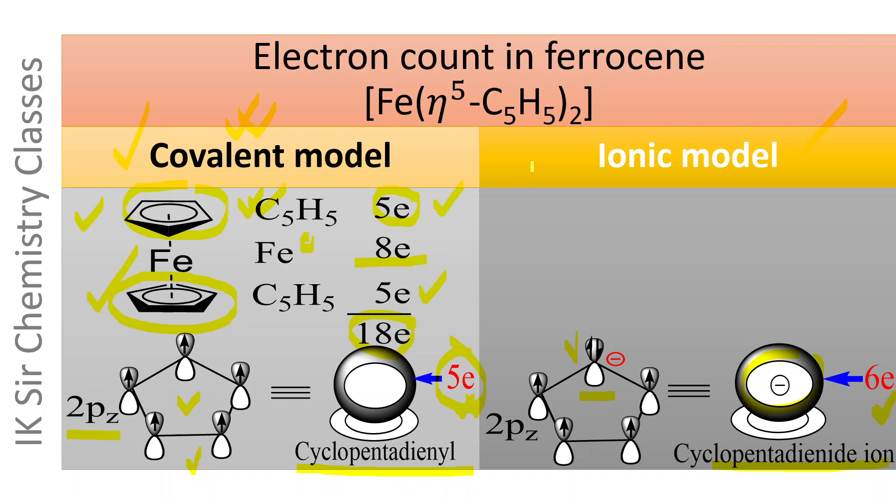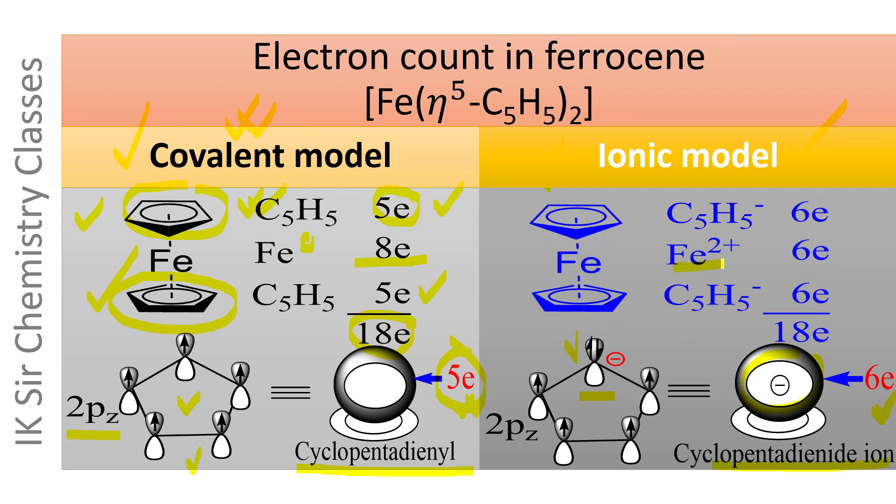According to ionic model, in ferrocene molecule, Fe2+ ion is sandwiched between two cyclopentadienyl ions.